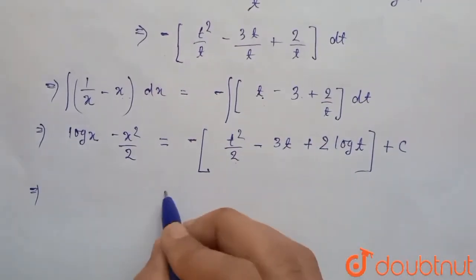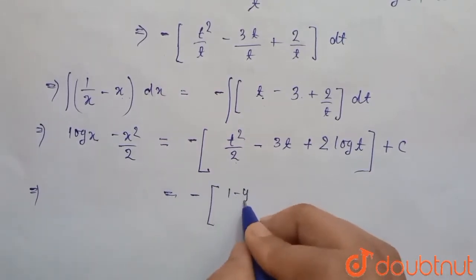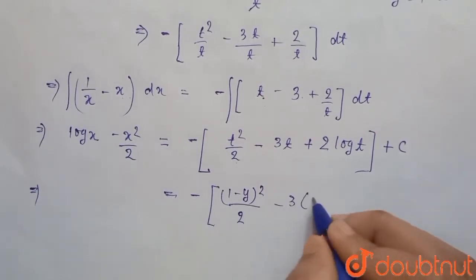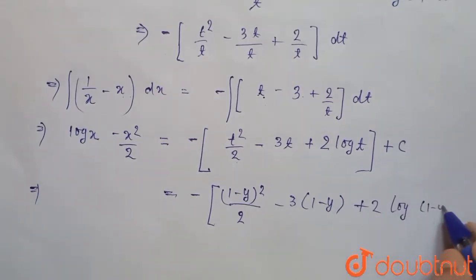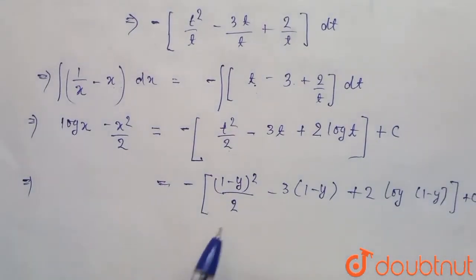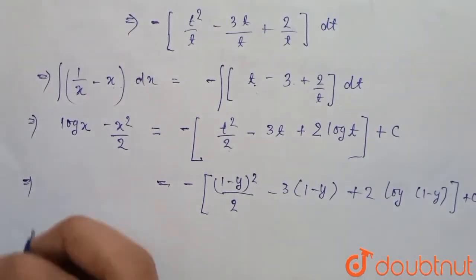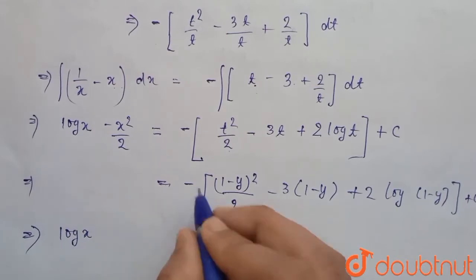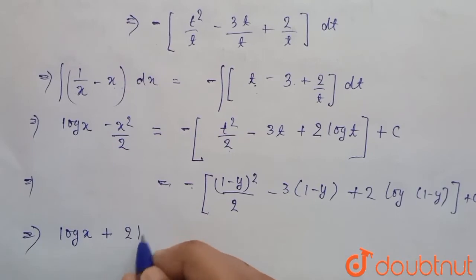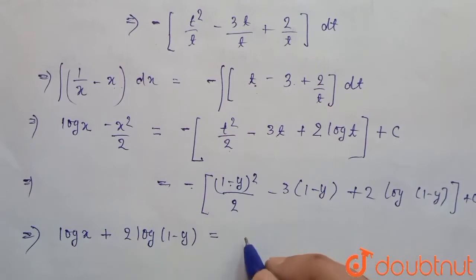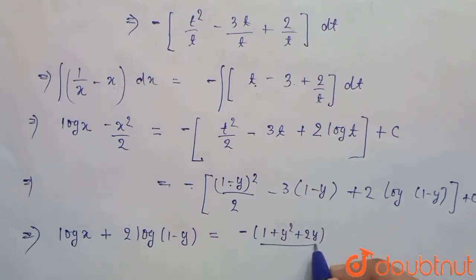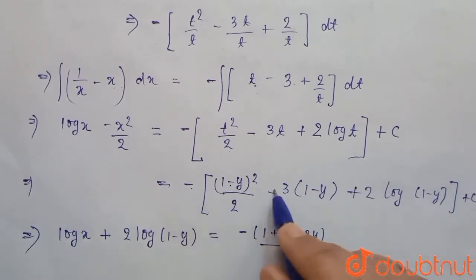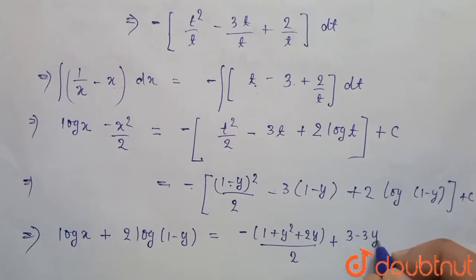Now we write the log terms on the left hand side and all other terms on the right hand side. So we have log x + 2 log(1 - y) equals, opening up: -(1 + y)² + 2y) / 2, which gives -(1 + 2y + y²) / 2 + 3y, and x²/2 + c.